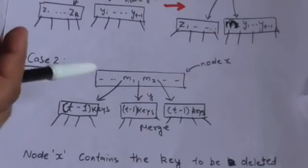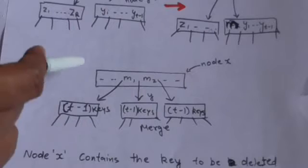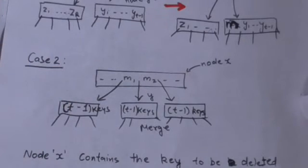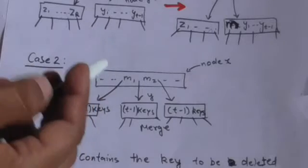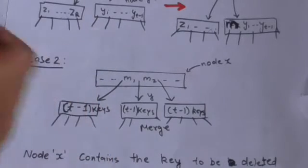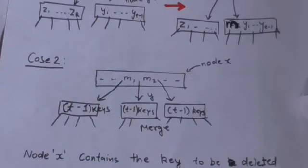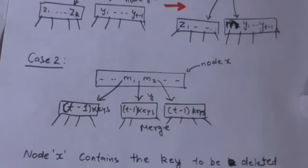The second case is when both siblings of node Y have T-1 keys. In this case, we will merge node Y with any one of its siblings. After merging, node Y will have more than T-1 keys — it will have 2T-1 keys — so now we can move to it.